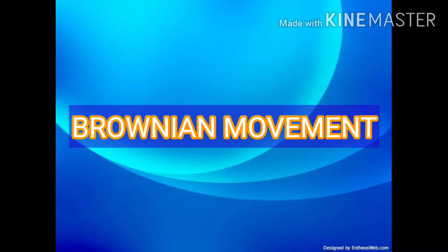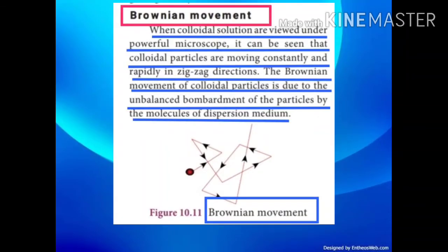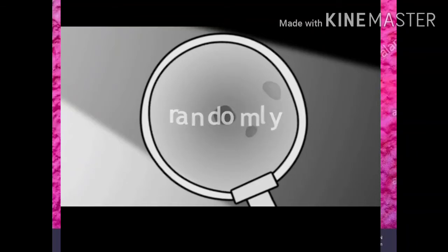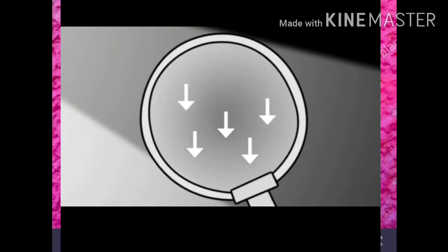Next, Brownian movement. When a colloidal solution is viewed under a powerful microscope, it can be seen that colloidal particles are moving constantly and rapidly in zigzag directions. The Brownian movement of particles is due to the unbalanced bombardment of the particles by the molecules of the dispersing medium.